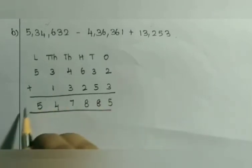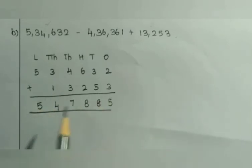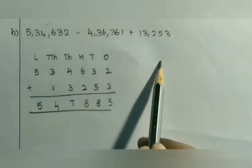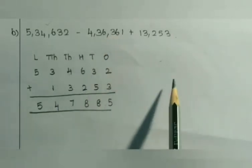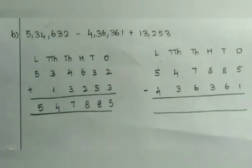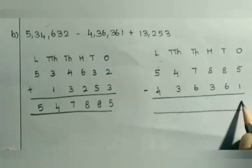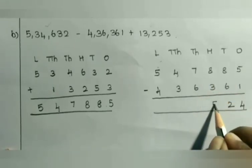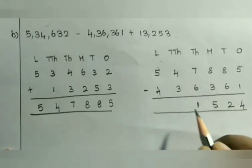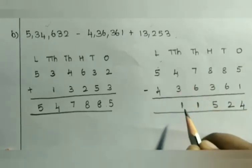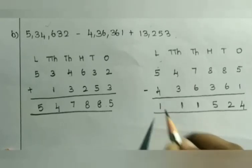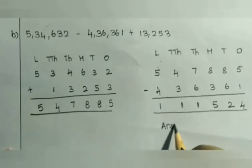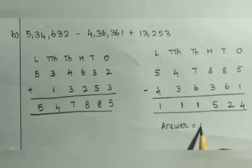Now this sum becomes the minuend and 34,632 becomes the subtrahend. Write the minuend first and the subtrahend second and find the difference. 1's position: 5 minus 1 is 4, 8 minus 6 is 2, 8 minus 3 is 5, 7 minus 6 is 1, 4 minus 3 is 1, 5 minus 4 is 1. So the answer is 1,11,524.